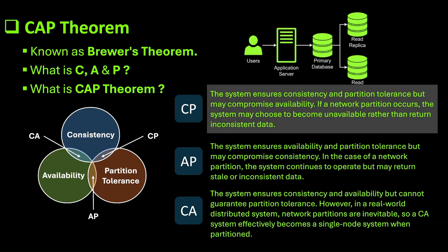The first combination is CP. In this case the system ensures consistency and partition tolerance but may compromise availability. If a network partition occurs, the system may choose to become unavailable rather than returning inconsistent data.